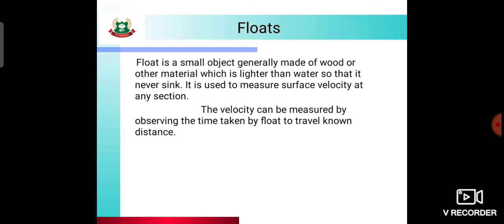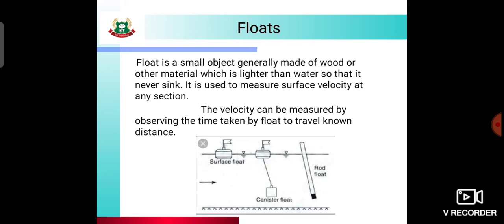To measure velocity using a float, we place the float at one location and let it travel to another location over a known distance. By observing the time taken to travel that known distance, we calculate the surface velocity. There is a surface float and a secondary float; by measuring the time taken to travel between the two points, we determine the velocity of flow.